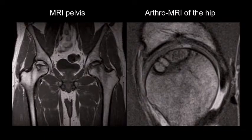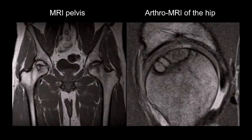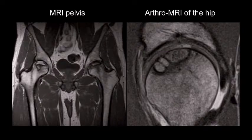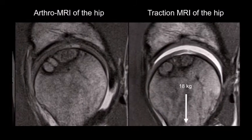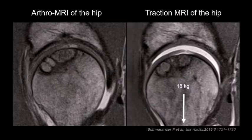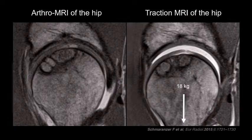The second step in terms of enhancing the quality of your images is doing an arthro-MRI of the hip — contrast agent intra-articular — and then focusing your field of view on the entire hip joint and not on the entire pelvis. You can enhance the quality of the morphological regions even further by adding some traction, as you can see here for the same patient shown on the left side.